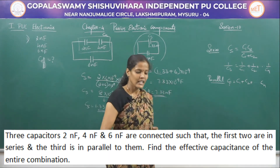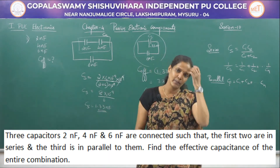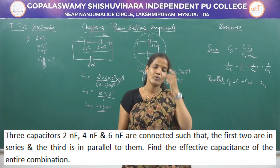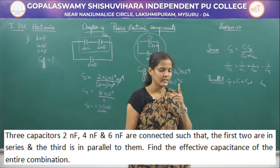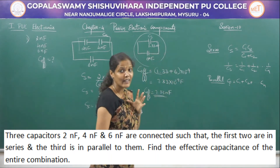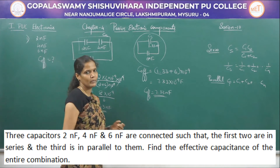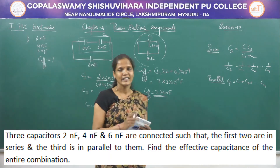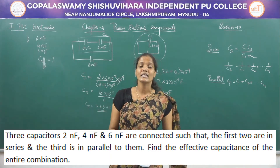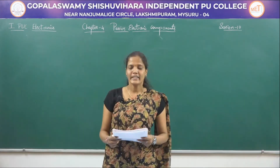So 7.33 nanofarad is the effective capacitance of the given combination of 3 capacitors connected in this manner. Now let us move on to the second problem.